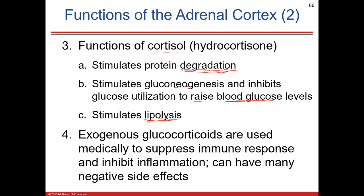If cortisol breaks down fat stored in adipose tissue, you might lose weight at first — but then what do you do with all that excess glucose? Your liver converts it back to adipose. And if you become diabetic and can't use the glucose, you may lose weight because you go back to using fatty acids for energy. This connects to cellular metabolism concepts covered earlier.